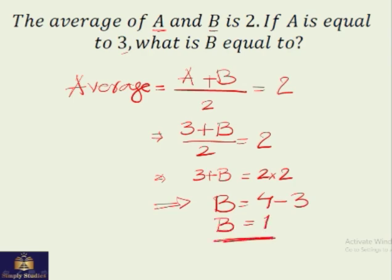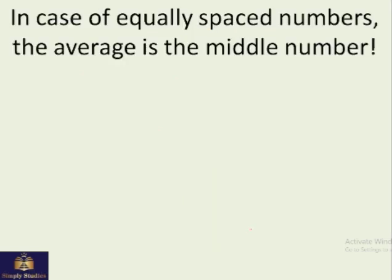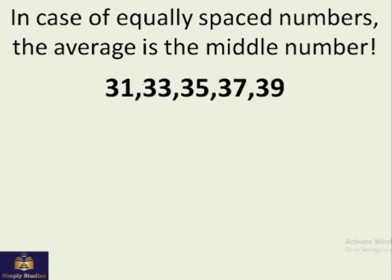Now in case of equally spaced numbers, the average is the middle number. That's an easy trick. We don't have to add them and divide. For example, if there are one, two, three, four, five numbers here, the normal method of calculating averages is to add them and divide by five.